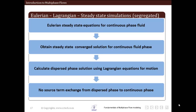In this algorithm, we first solve the Eulerian steady-state equations for the continuous phase and obtain a stable, converged, non-changing solution for the continuous phase flow field. Using this solution, we calculate the dispersed phase solution using the Lagrangian equation of motion — that is, we calculate trajectories and velocities using force balance. This is the end of our solution. We do not calculate source term exchange from the dispersed phase back to the continuous phase, so there is only one-way coupling — from the continuous phase to the dispersed phase. This approach is suitable for low volume loading of the dispersed phase.